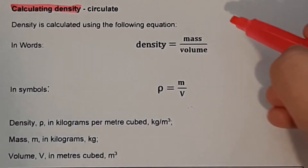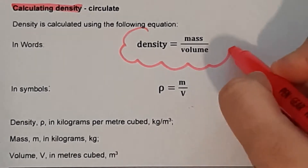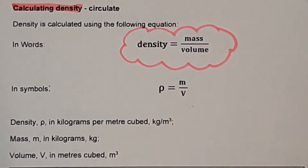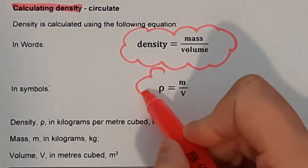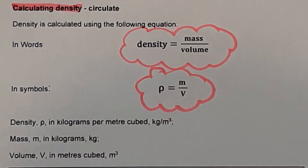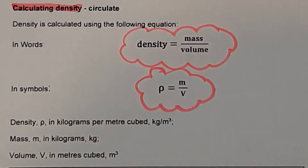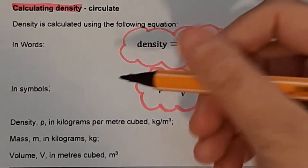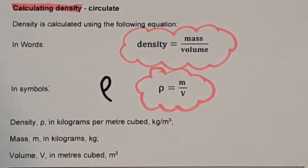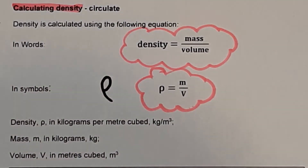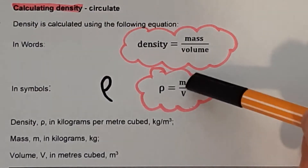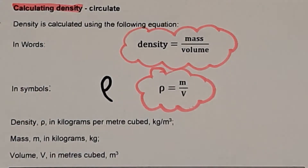Calculating density. Density is calculated using the following equation: density is equal to mass divided by volume. We can put this in symbols. The symbol looks like a P but is actually rho, R-H-O. It can look like a P or a bit like an E depending on how you draw it. So rho equals lowercase m for mass and capital V for volume.